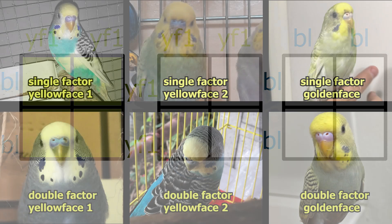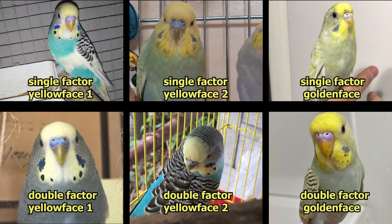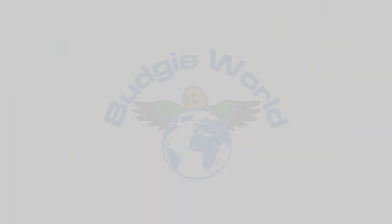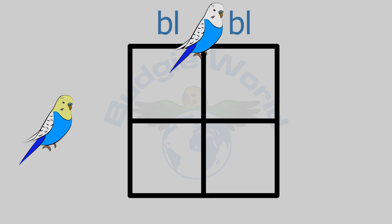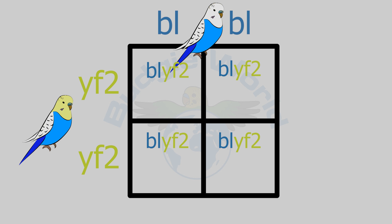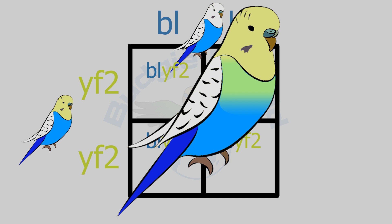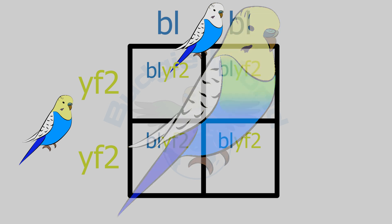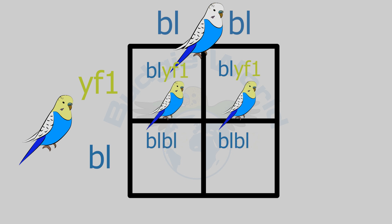What if your budgie does have a yellow face — is it single factor yellow face type 1 or double factor yellow face type 2? Use the same trick: breed it with a confirmed normal blue budgie with no yellow face genes. If the mutation is double factor yellow face type 2, all offspring will be single factor yellow face type 2 — the yellow pigmentation will spread to their body, which is easily recognizable. If the mutation is single factor yellow face type 1, only half the offspring will have yellow face and the other half will be normal blue.